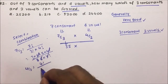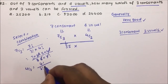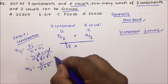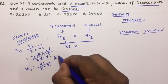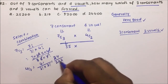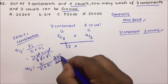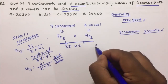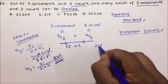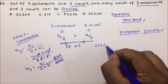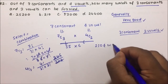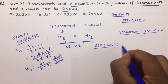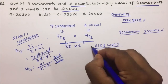Now 4C2: using the formula, 4! / (2! × 2!) = 24 / (2 × 2) = 24 / 4 = 6. So 4C2 = 6. Therefore, 7C3 × 4C2 = 35 × 6 = 210. So there are 210 ways in which we can select 3 consonants and 2 vowels.